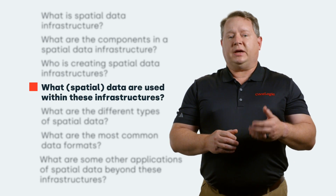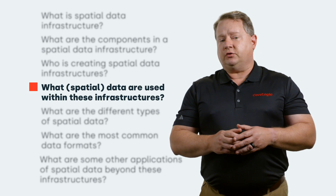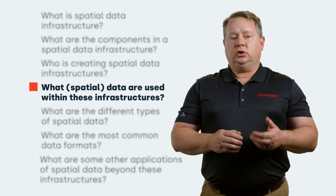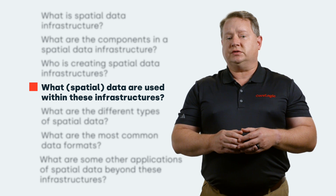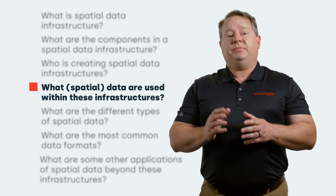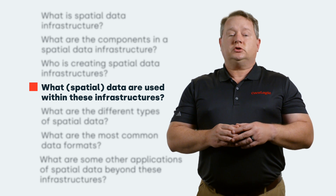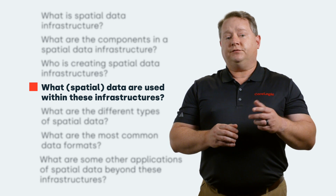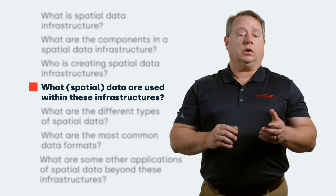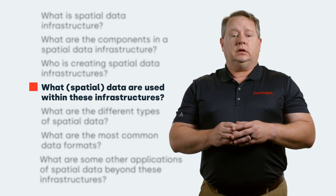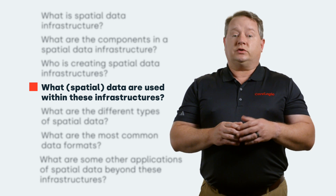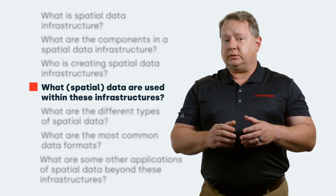What spatial data are used with these infrastructures? Data in an SDI generally includes spatial data describing locations of where populations reside, where businesses have locations, terrain features such as elevation and foliage, travel networks — notably roads, riverways, and railroads — and terrestrial assets such as, in the case of telecom, where cell towers exist or fiber has been installed.